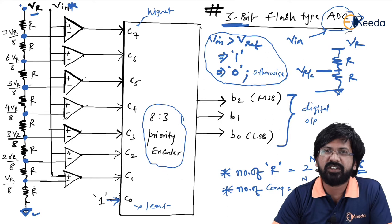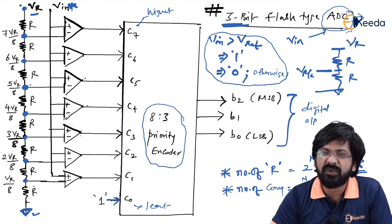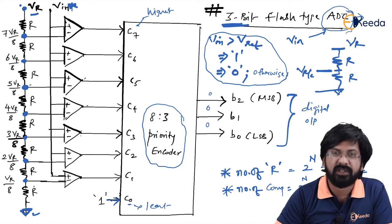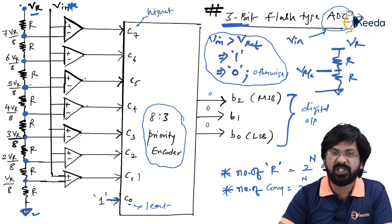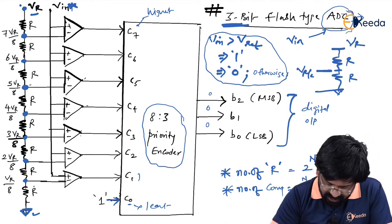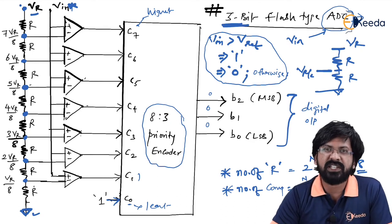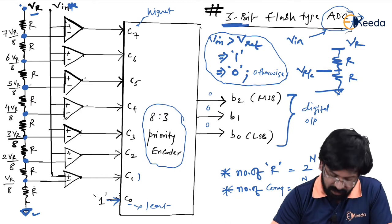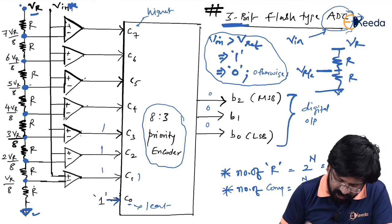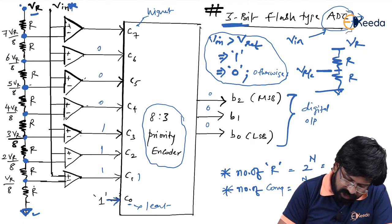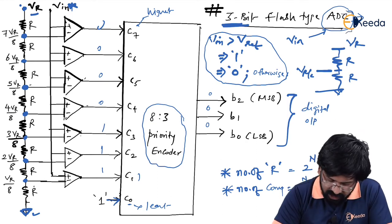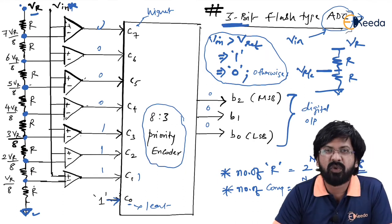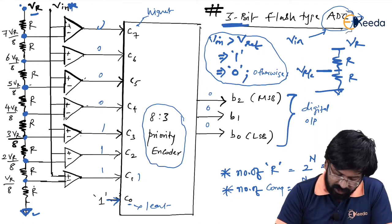For example: if C0 equals 1 and all others are 0, the output is 000 (decimal 0). If C1 equals 1 (with C0 also 1), C1 has higher priority so the output is 001 (decimal 1). If C3, C2, C1, C0 are all 1 and the rest are 0, C3 has the highest priority, giving output 011, which represents 3.